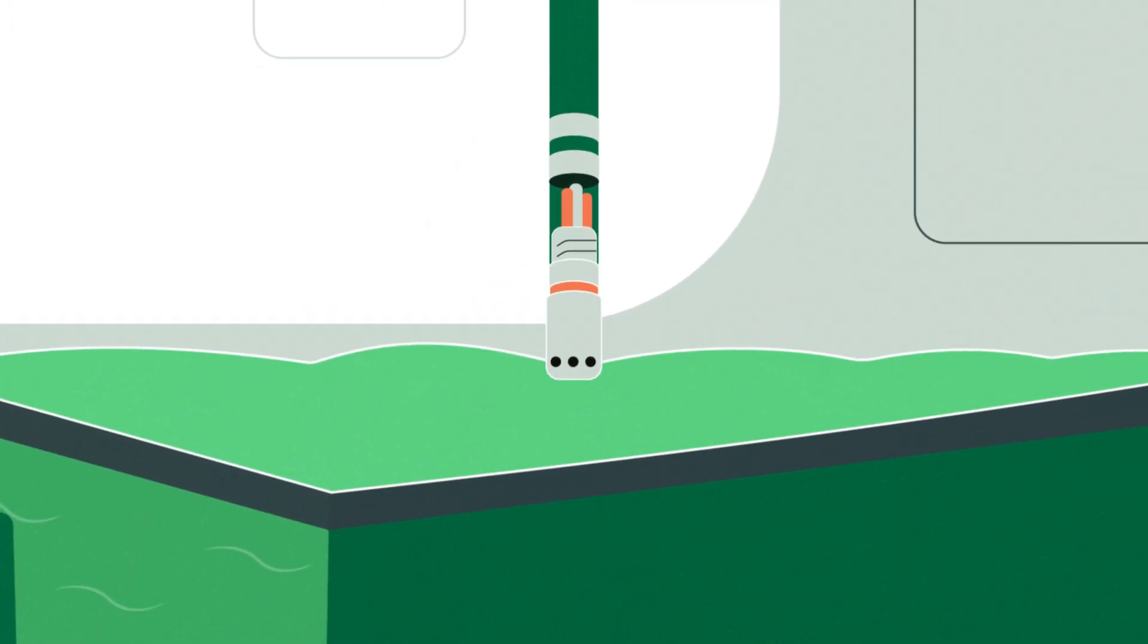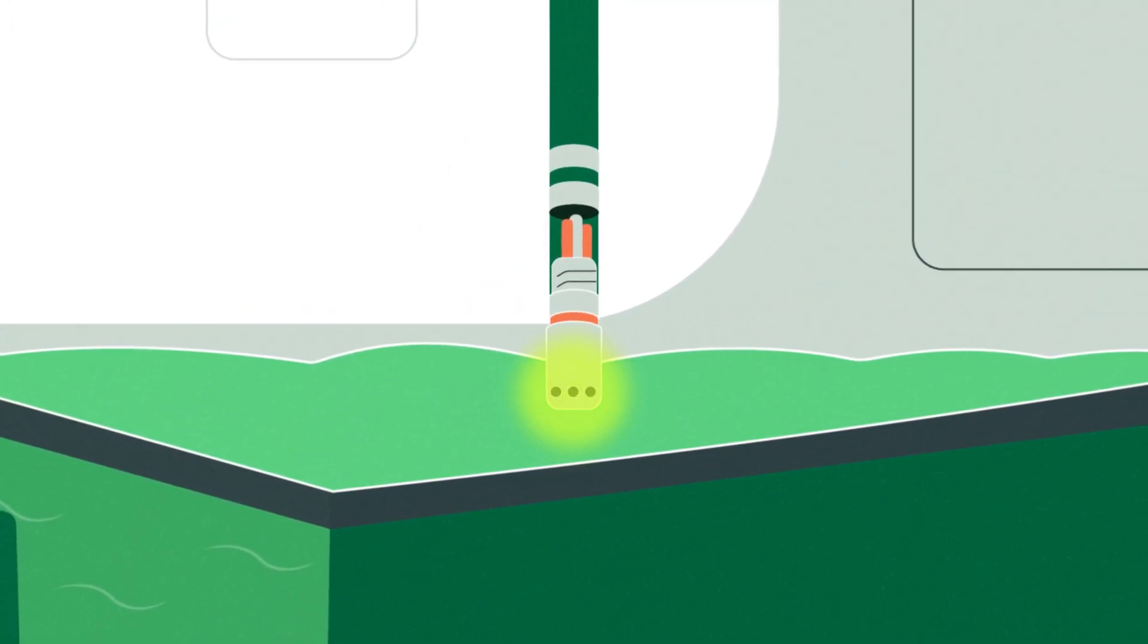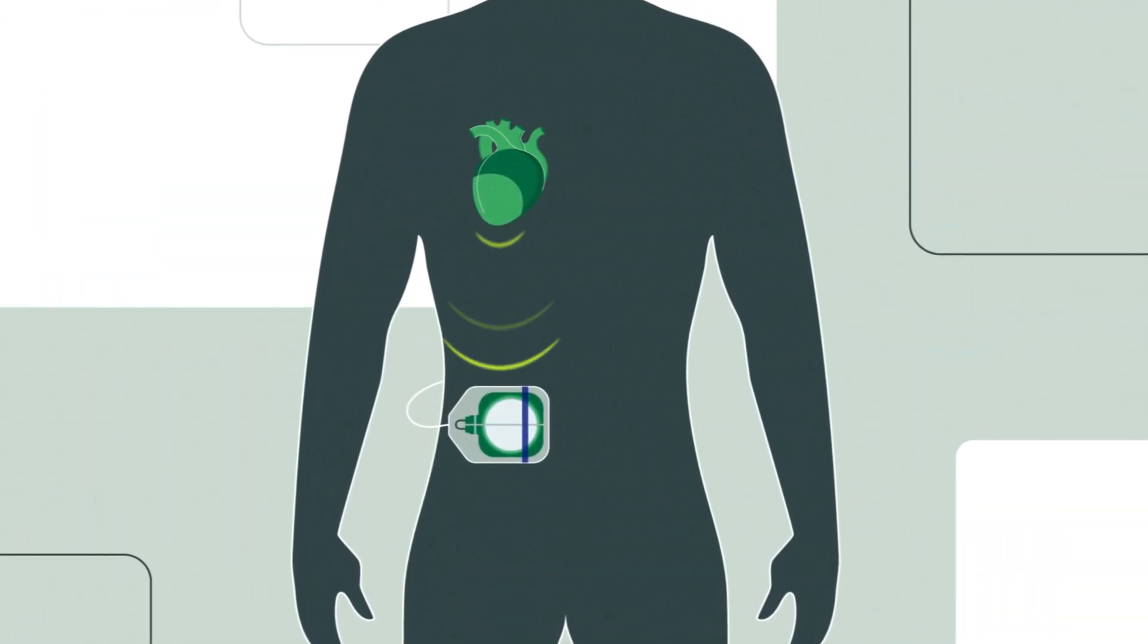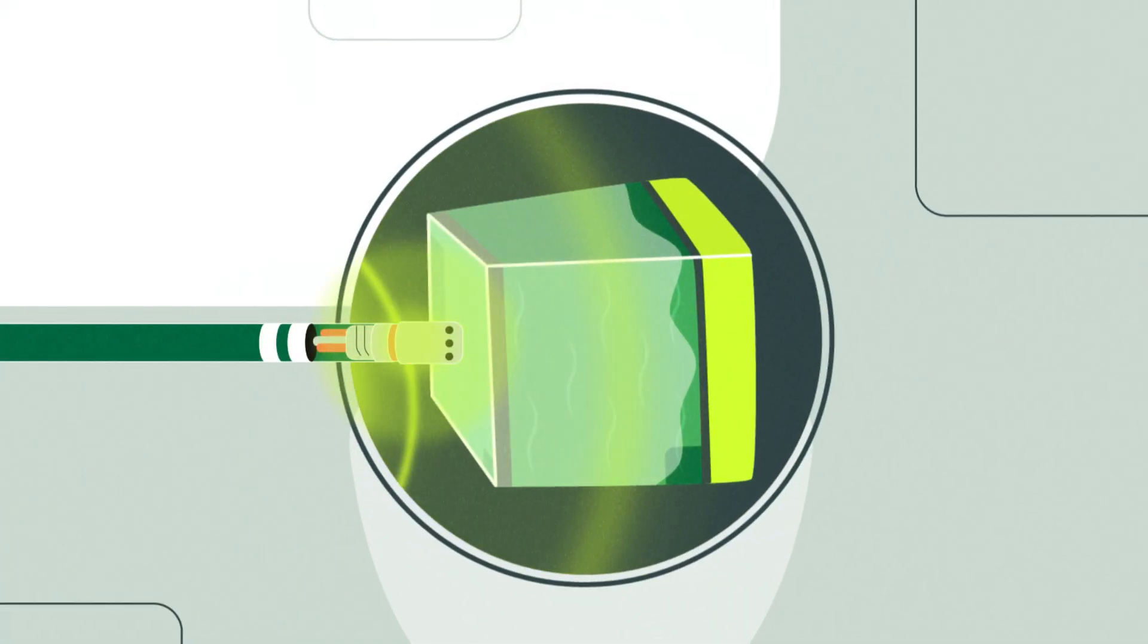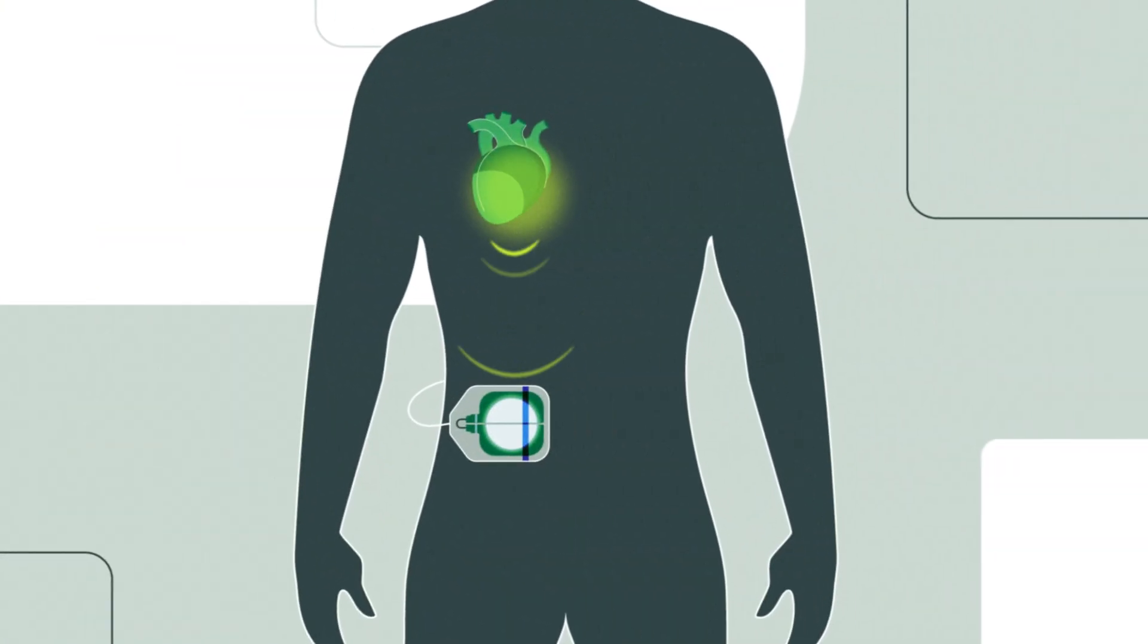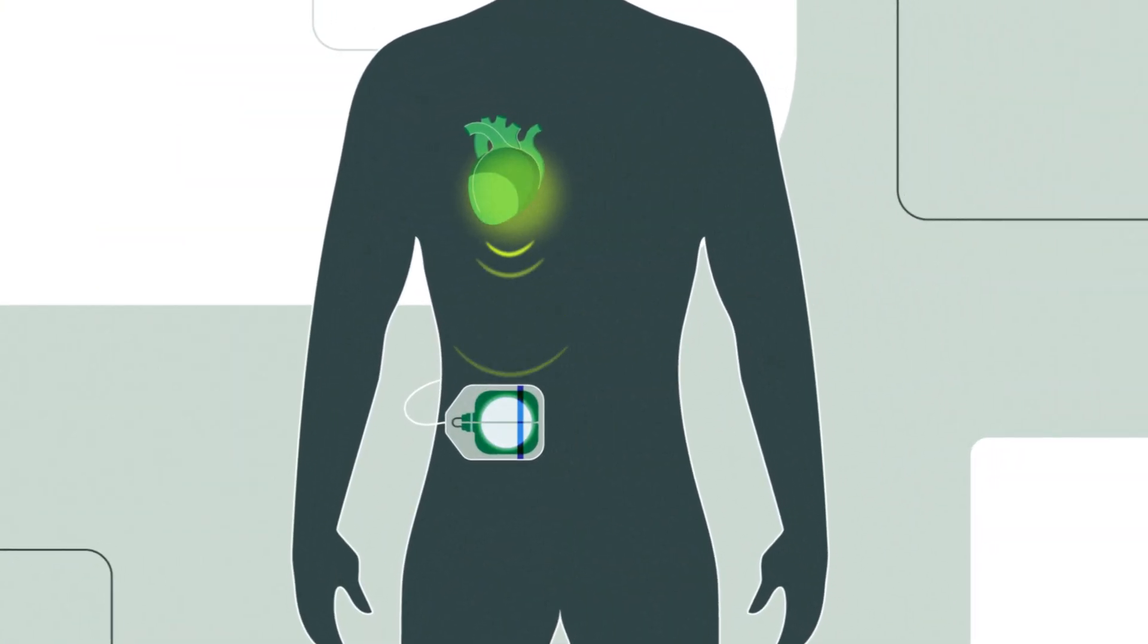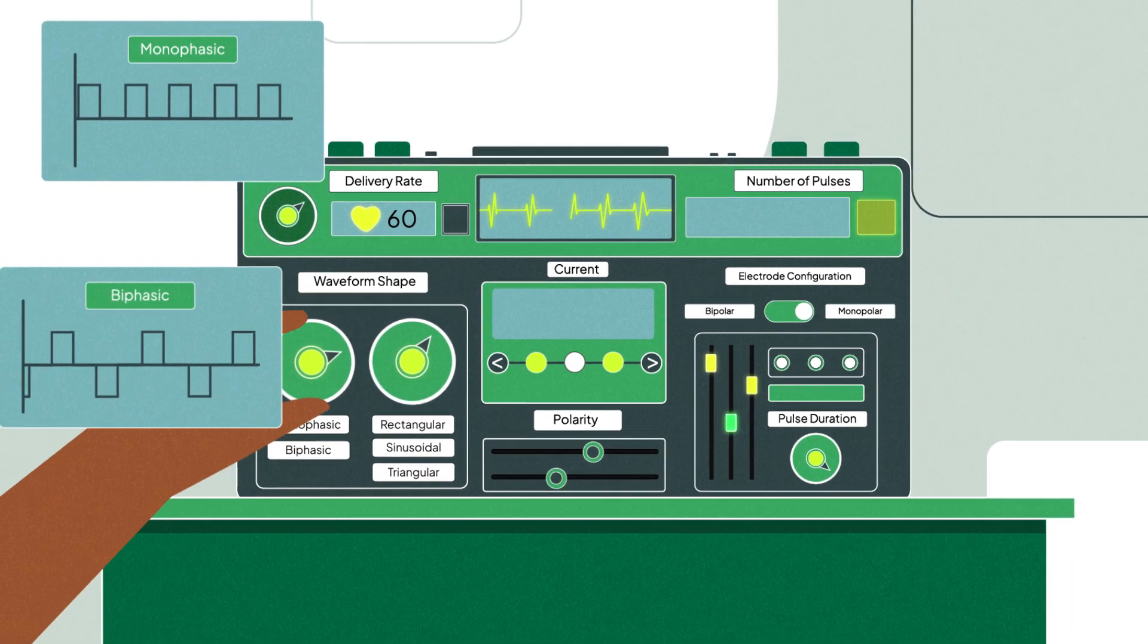In a monopolar configuration, an electric field is created at the catheter tip and directed towards a remote dispersive electrode, achieving deeper lesions. While the larger span of monopolar fields can increase the potential for muscle stimulation, waveform design can be tuned to mitigate this.